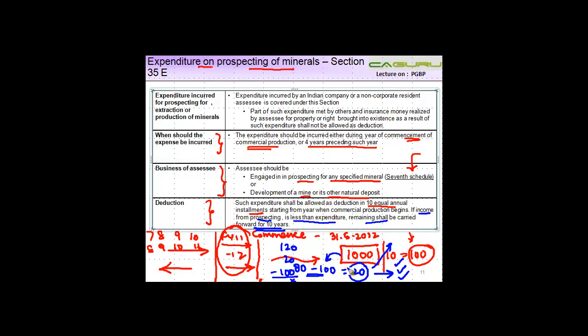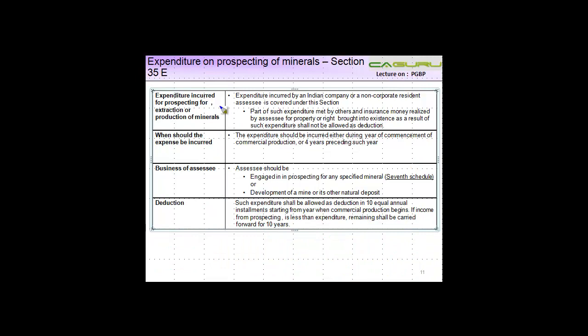Just to resummarize, the expenditure incurred for prospecting, extraction, or production of minerals is allowed. If someone else bears a part of such expenses, that has to be reduced. If you bring a property into existence which is destroyed and then you get some insurance money in respect of that, that is also supposed to be reduced.